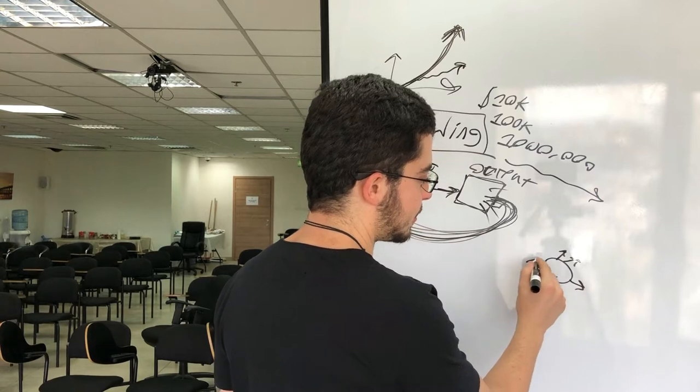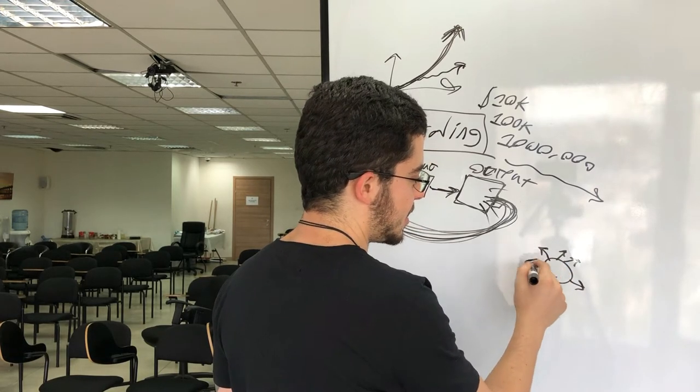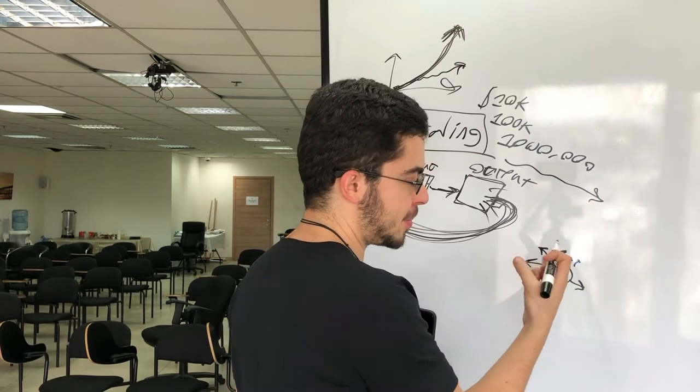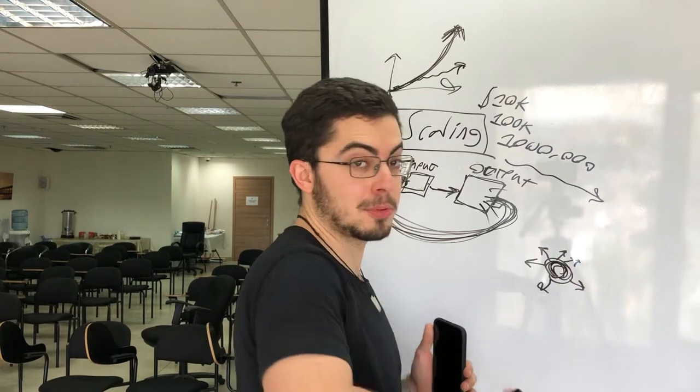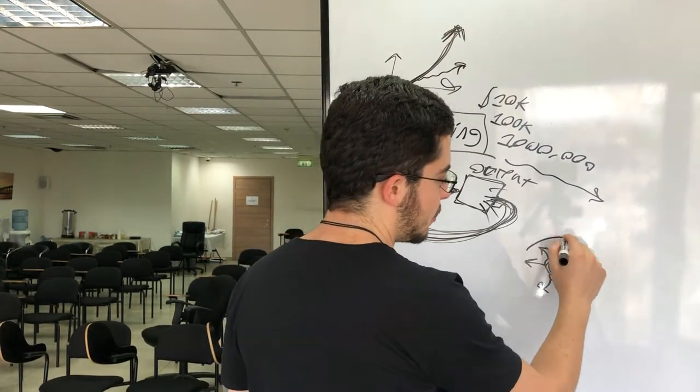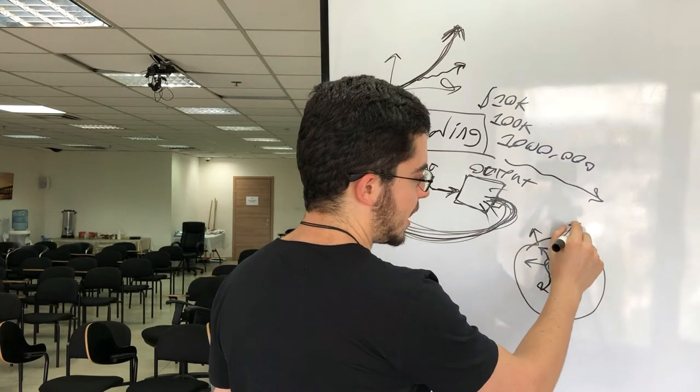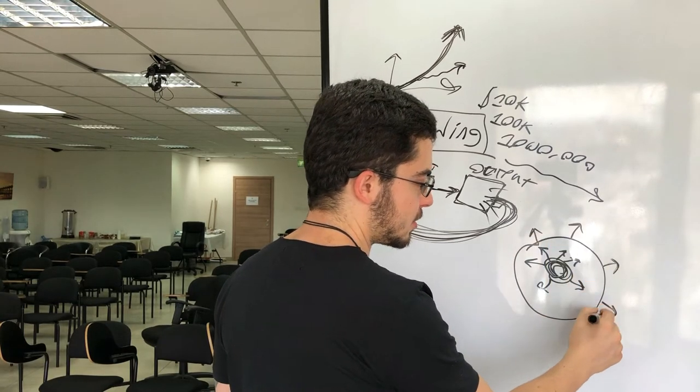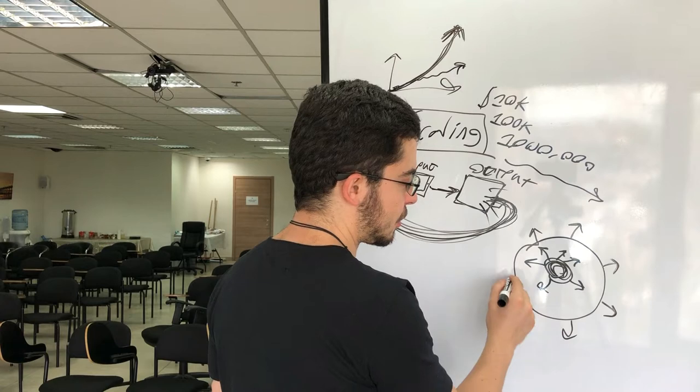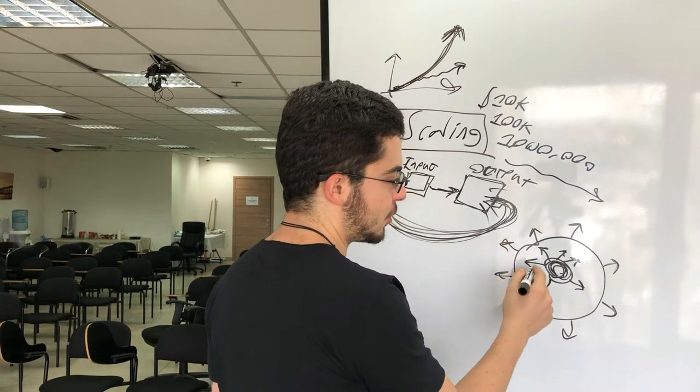You start out at this kind of circle and then everything inside here, you eat up. This is your client base. This is the people who know you. And then when you grow, notice that everything grows in multiples. So now if you grew three times, you actually take up a lot more space.